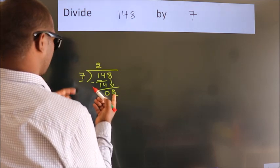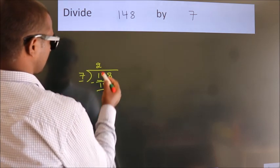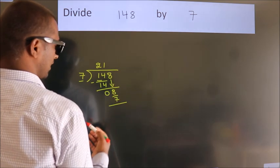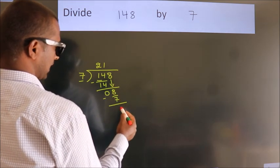A number close to 8 in the 7 table is 7 ones, 7. Now we subtract, we get 1.